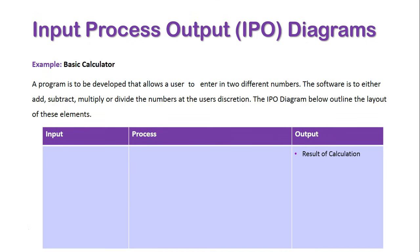Our output is we want the result of this calculation, so we're working backwards. In order to get that, what do I need to put into the system? I need to put in the two numbers.